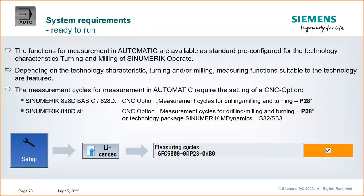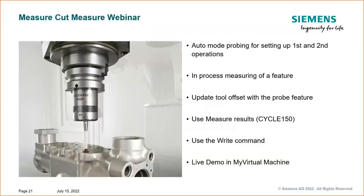Here's what we'll cover in the measure cut measure webinar: auto mode probing of first-op and second-op setup, in-process measurement of a feature, updating a tool offset with a probed feature, using the measure results cycle 997 and the write command, and doing this on a virtual machine with live demos on a real-life part.